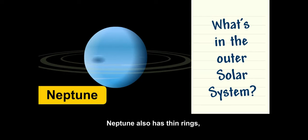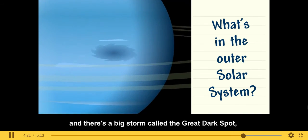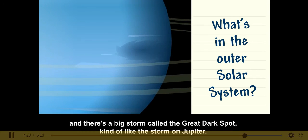Neptune also has thin rings, and there's a big storm called the Great Dark Spot, kind of like the storm on Jupiter.